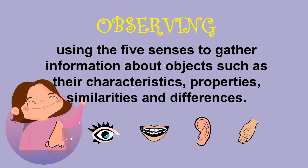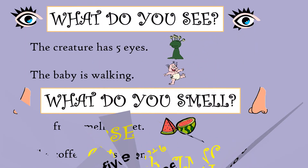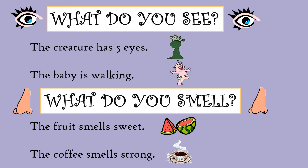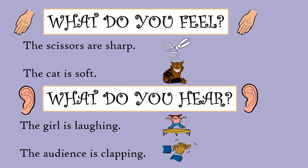What are the five senses? Smell, sight, taste, hearing, and touch. Do you see the creature has five eyes? The baby is walking. What do you smell? The fruit smells sweet; the coffee smells strong. What do you feel? The scissors are sharp; the cat is soft. What do you hear? The girl is laughing.